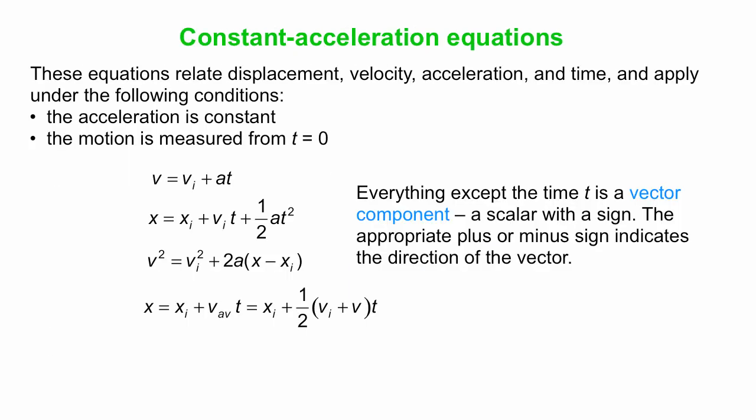These are the constant acceleration equations we use to relate displacement, velocity, acceleration, and time. Note that everything except time is a vector component — a scalar with a sign — while time is just a scalar. You use appropriate plus or minus signs to indicate the direction of those vector quantities. We'll measure time from t equals zero, and the acceleration is constant. A word about that last equation: the first part — xi plus v-average times t — is generally true all the time. It's just the second part which is only true in the constant acceleration case.